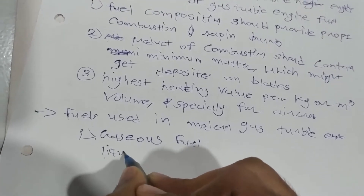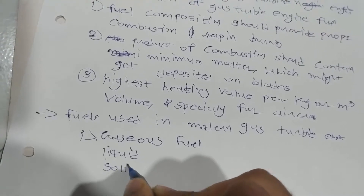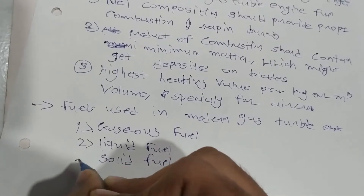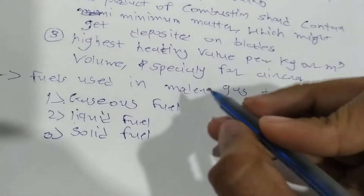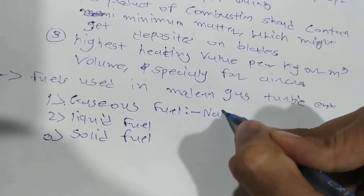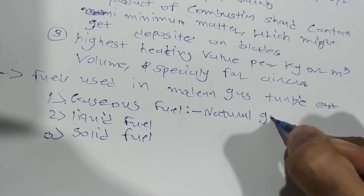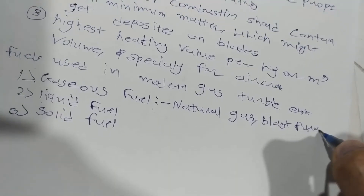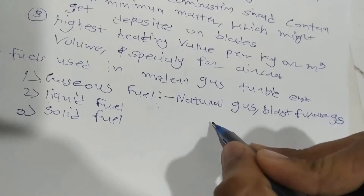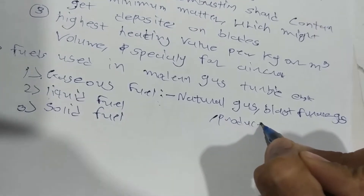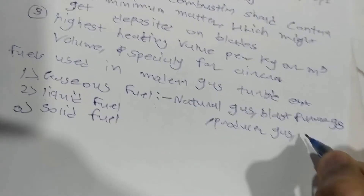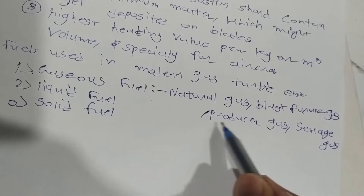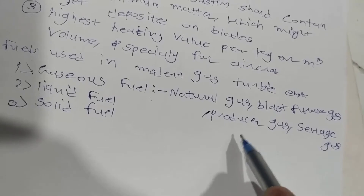Now I will tell you which fuels are used in modern gas turbine engines. We use gaseous fuel, liquid fuel, and solid fuel. For gaseous fuel, we use natural gas, blast furnace gas, producer gas, and sewage gas. If you don't know about sewage gas and producer gas, let me know in the comments and I will explain them in detail.